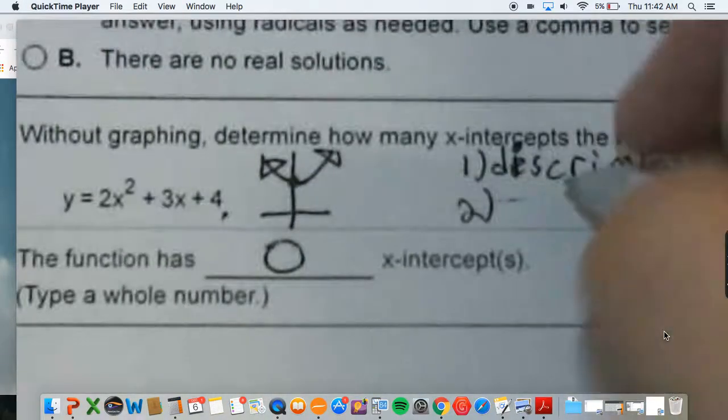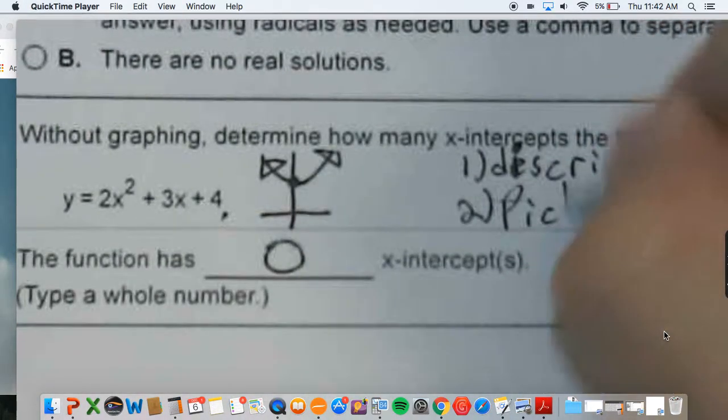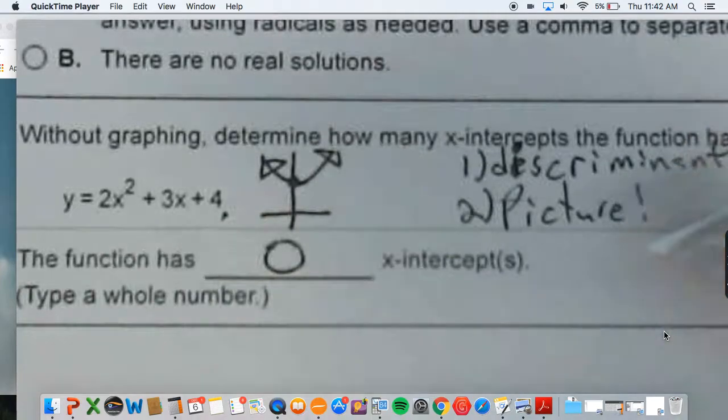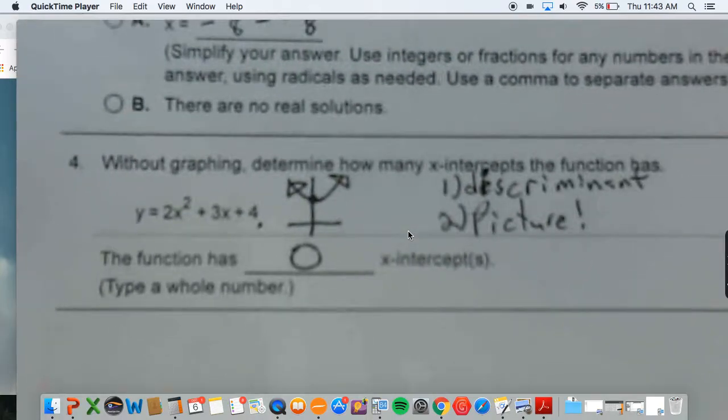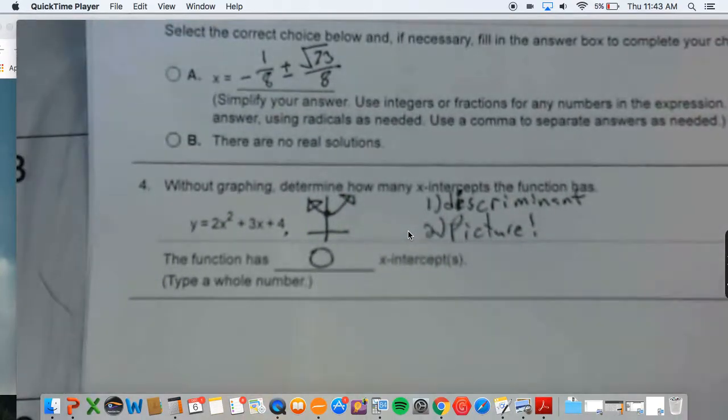So you can either look at the discriminant, or you can just picture this. y-intercept has to be 4, and it's opening upwards, so that's how that's going to roll. So those are the first four.